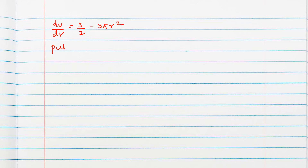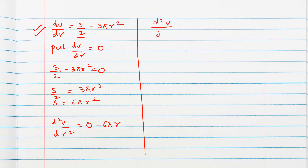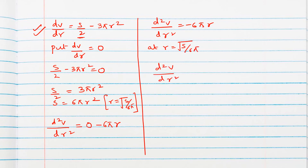Setting dV/dr = 0: s/2 − 3πr² = 0, so s = 6πr². Finding d²V/dr²: differentiating again gives −6πr. Substituting r = √(s/6π), the second derivative is −6π·√(s/6π), which is negative. Therefore volume is maximum at s = 6πr².